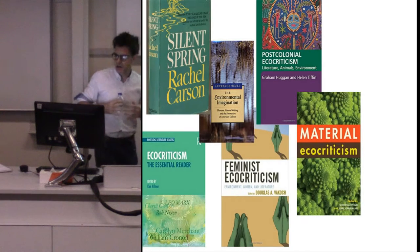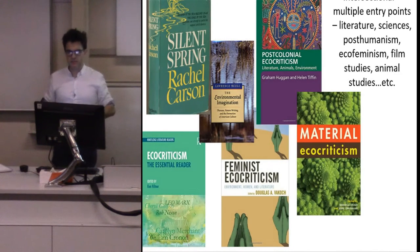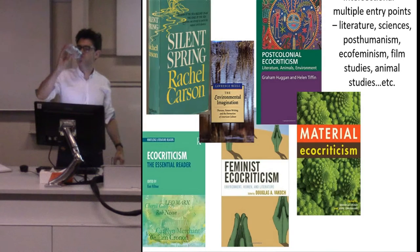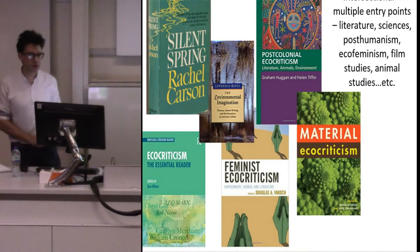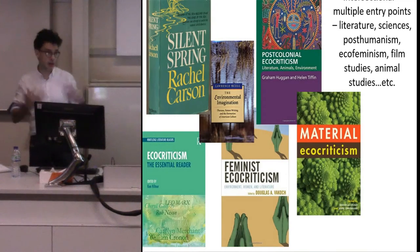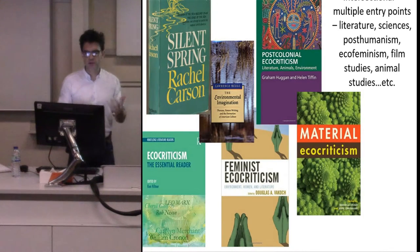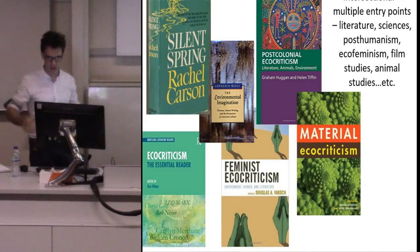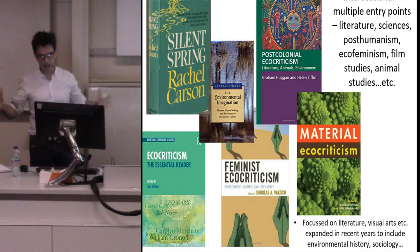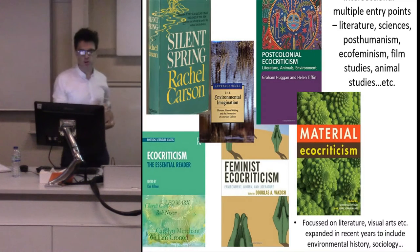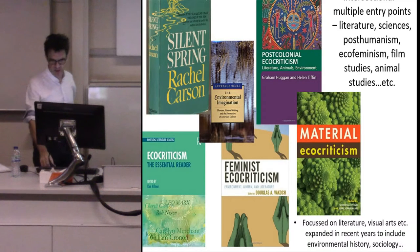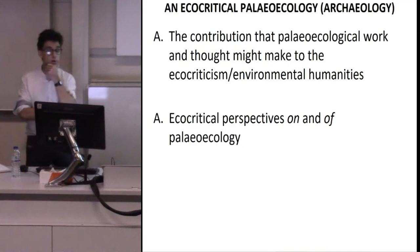You can see how the field is opening up — it's very much intersectional, with multiple entry points. Particularly these intersections between literature, sciences, different schools of thought — post-humanism, eco-feminism, film studies, animal studies — almost you name it, there's an interface with ecocriticism. Mainly focused in the early days on literature, it has opened up into the visual arts and expanded to include environmental history, sociology, and many other areas of engagement. That's kind of our entry point.